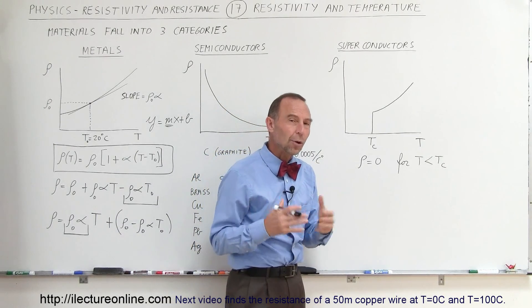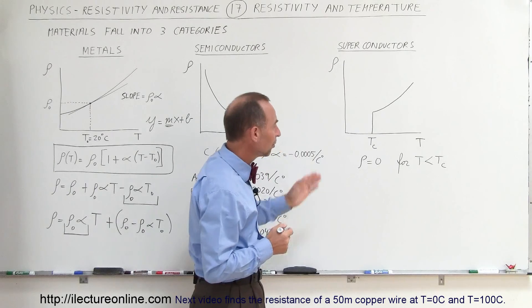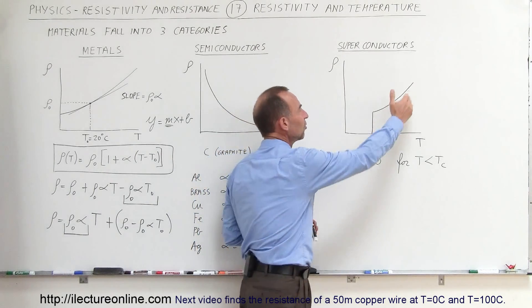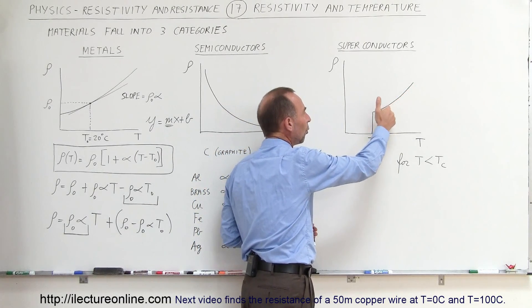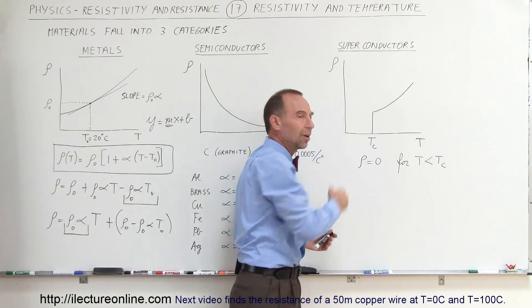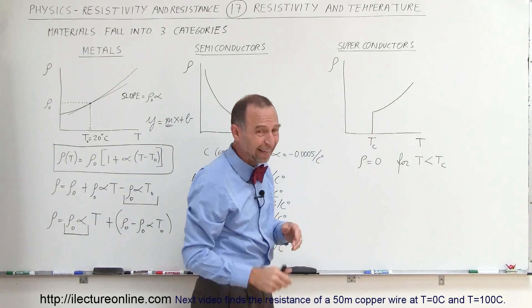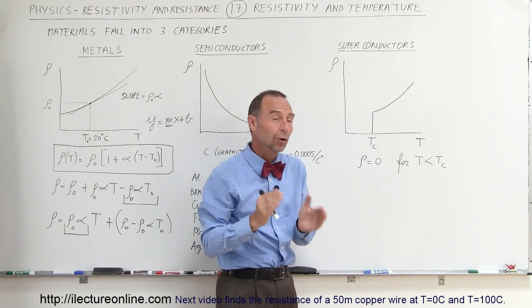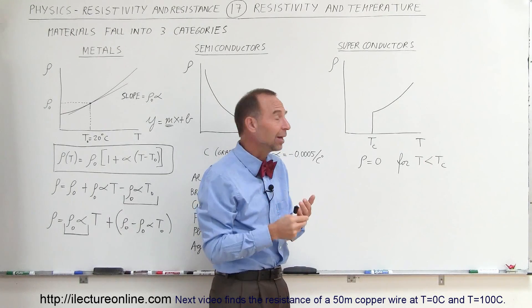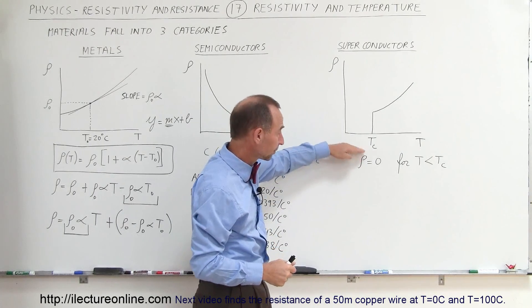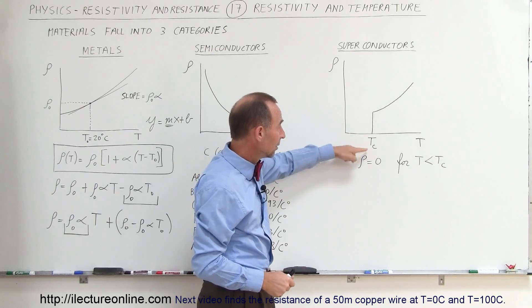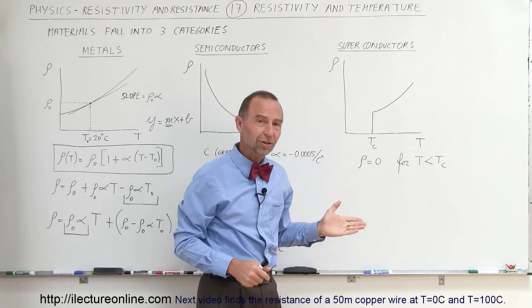We have found, and I'll do another video particularly about superconductors, but we have found that when you decrease the temperature on certain materials, once you reach a critical temperature—that's what T sub C means, and those temperatures are usually very very low, very close to absolute zero degrees Kelvin—the resistivity actually drops to zero.